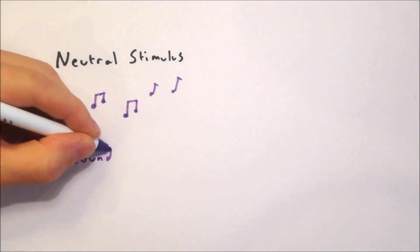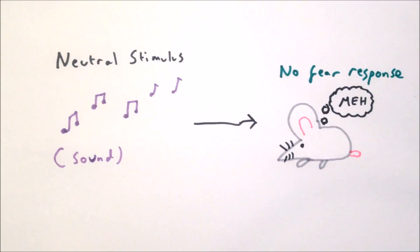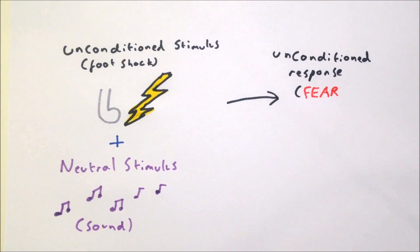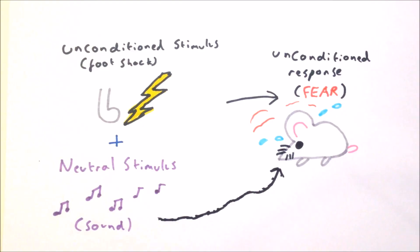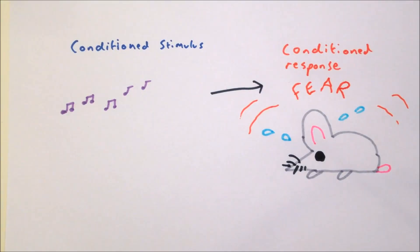The experiment also uses a neutral stimulus, such as a sound, which on its own produces no fear. After a number of trials, when the neutral and unconditioned stimuli are presented together, the animal learns the association between the sound and the shock. The neutral stimulus of the sound is then able to cause the fear behaviour itself, without the shock.